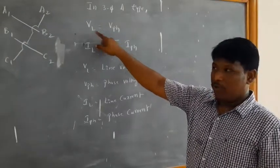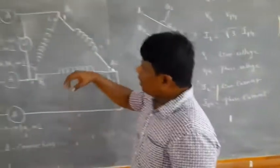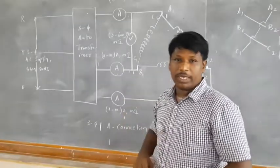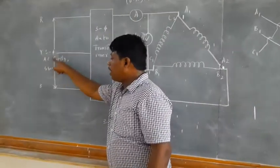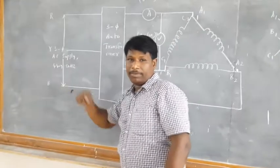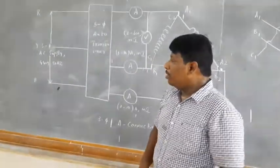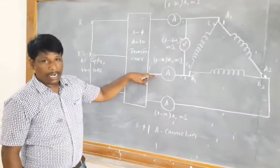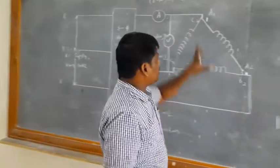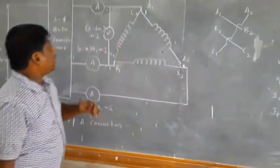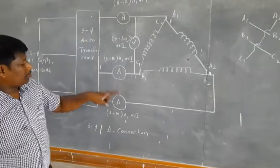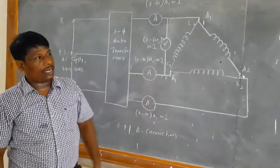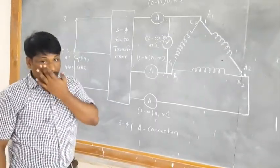Line voltage is the voltage between any two lines. In the case of three-phase connection, there are three terminals: R, Y, and B — R means red, Y means yellow, B means blue. Any voltage between any two terminals or two phases represents the line voltage, and voltage across any one phase represents the phase voltage. Three ammeters are used to measure individual line currents, and phase current can be calculated as line current divided by root three.